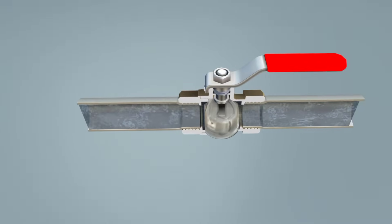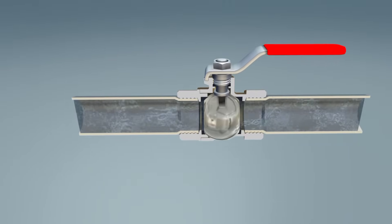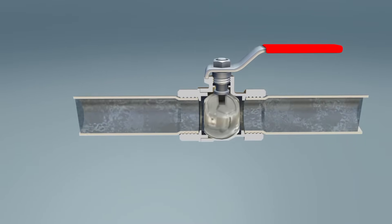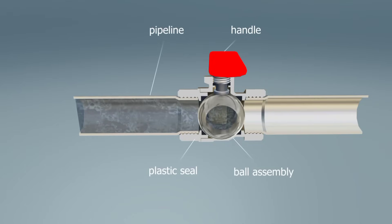In a ball tap, the ball assembly, a metal ball with a hole drilled in it, is turned by a handle. When you turn the tap on, the water flows through the hole. When you turn it off, the ball assembly turns and cuts off the flow of water.